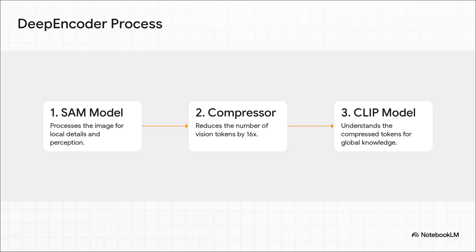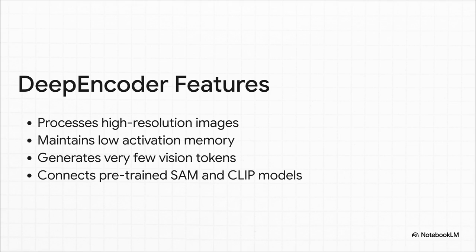First up, they use a model called SAM that's really good at scanning for tiny, fine-grained details, like the exact curve of each letter. Then, a convolutional compressor acts like a funnel, dramatically reducing the number of tokens. And finally, a model called CLIP comes in to understand the big picture, the global context of the whole page. So, what you get at the end of this clever pipeline is an encoder that is just incredibly efficient. It can handle high-res images without needing a ton of memory. And, this is the most important part, it spits out a tiny number of these supercharged, information-packed vision tokens.